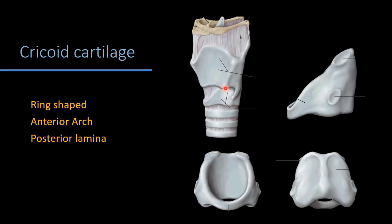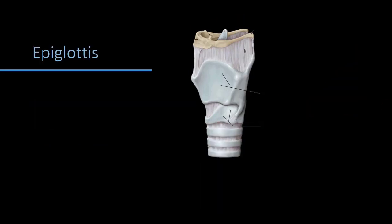The cricothyroid joints on either side act simultaneously. The action is in the form of a rocking movement on a transverse axis. When the anterior arch is lifted up, the posterior lamina goes behind; when the arch descends, the lamina comes forward.